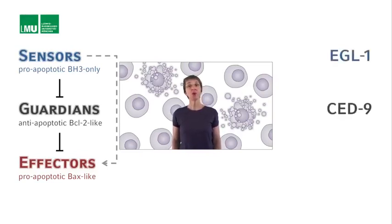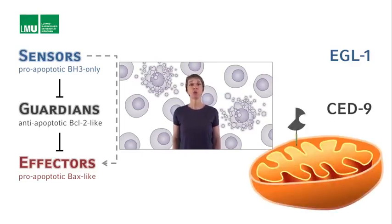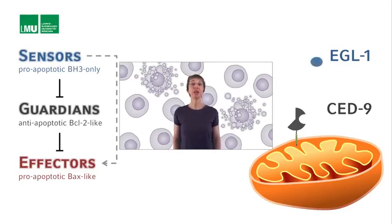SET9 encodes the C. elegans homolog of BCL2, one of the guardians. And EGO1 encodes the C. elegans BH3-only protein, one of the sensors. Like the BCL2 protein, the SET9 protein has a hydrophobic tail through which it is associated with mitochondria. Furthermore, the SET9 protein interacts with the EGO1 protein, and this interaction inhibits SET9 function.